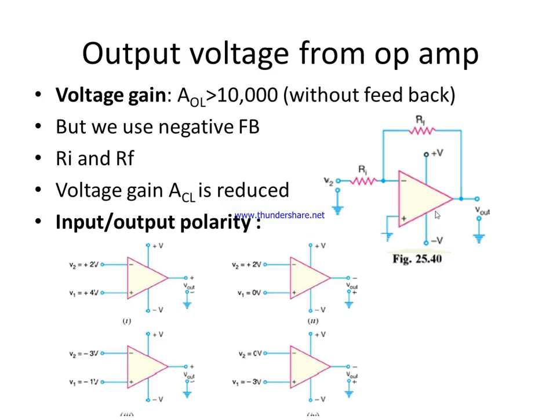With negative feedback applied, the voltage gain is now known as the closed-loop voltage gain, which is less than the open-loop voltage gain. The amplifier is now operating in a closed-loop manner. In an op-amp we use negative feedback and take the closed-loop voltage gain, which is usually less than 10,000.